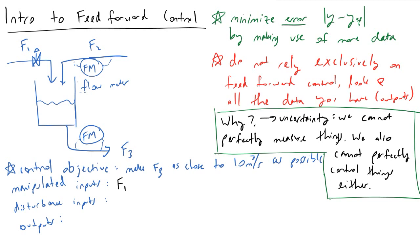We look at what our disturbance inputs are, and F2 would be a disturbance input because someone upstream is producing however many cubic meters per second of flow rate, but we need to make sure the mixed stream hits our target. The output in our process is F3. So if you were designing a feedforward controller for this process, you would look at whatever stream F2 is, subtract it from your setpoint, and determine what flow rate you need to make F1.